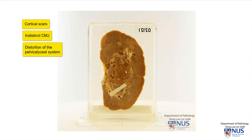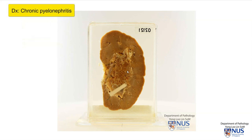This is an example of a case of chronic pyelonephritis. Chronic pyelonephritis is a condition in which there is inflammation and scarring that involves the renal tubules, the interstitium, and also the pelvic calyceal system.